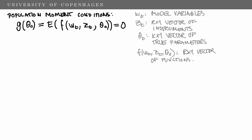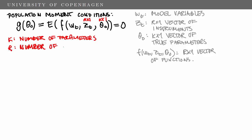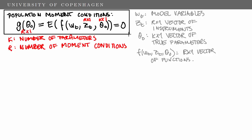So the dimensions we have here: Zt was an r by 1 vector, and theta zero was a k by 1 vector. So k is the number of parameters. We are interested in using the population moment conditions to derive a consistent estimator of the true parameters theta zero. And r is the number of moment conditions, giving us an r by 1 vector of population moment conditions.